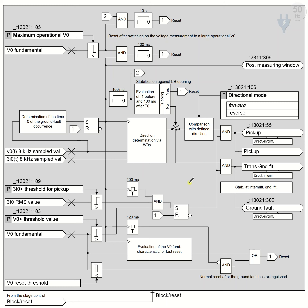The remaining logic is the pickup logic, which is related to the pickup thresholds. The system gets the I0 RMS value and the V0 fundamental value. If these pass some of the thresholds — which we will discuss in another video with specific values for a transmission line — then the output is 1. This 1 comes from 3I0 and 3V0, and after 100 milliseconds it starts to turn on this register. Turning on this register is our latch.